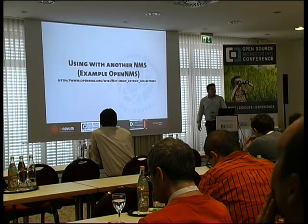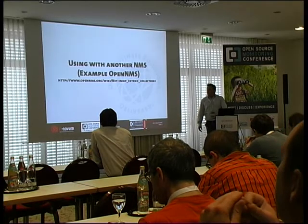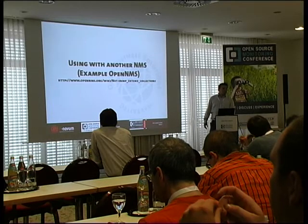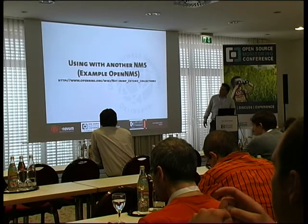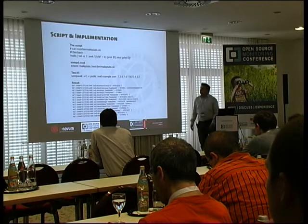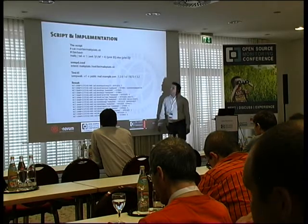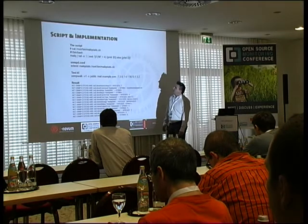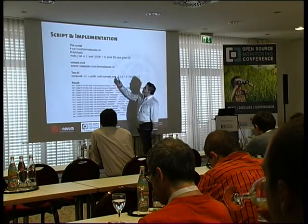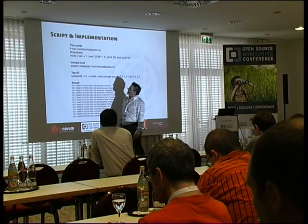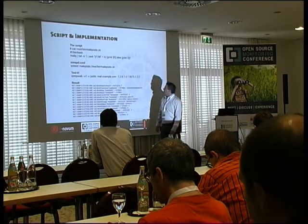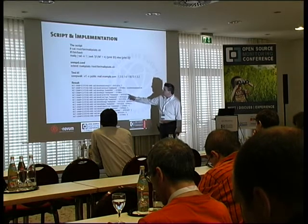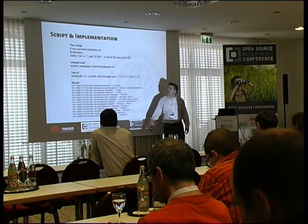I told you I came from OpenNMS before I went to Nagios. You can use this with other monitoring tools — for example OpenNMS. We will see this for data collection. You have a little script for the mail queue — you get the requests and make the actual count. Then you can use the extend function with the script, do an SNMP walk, get the mail queue stats, and then graph it.